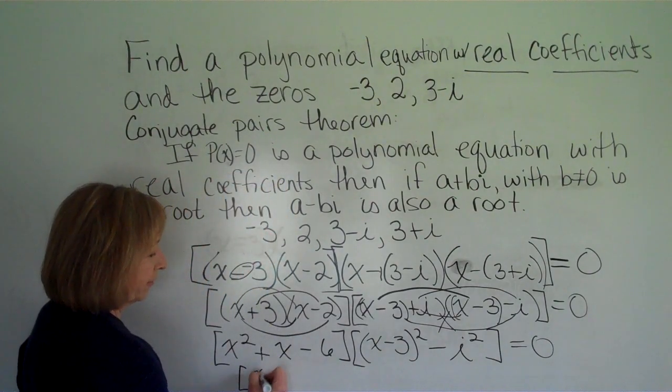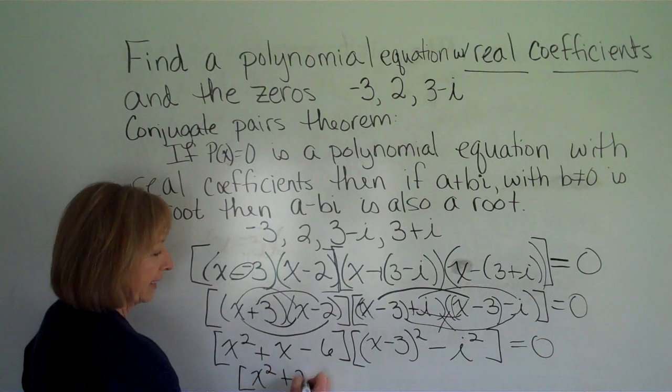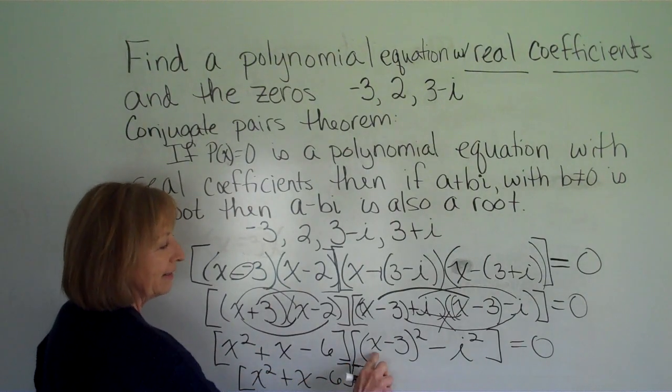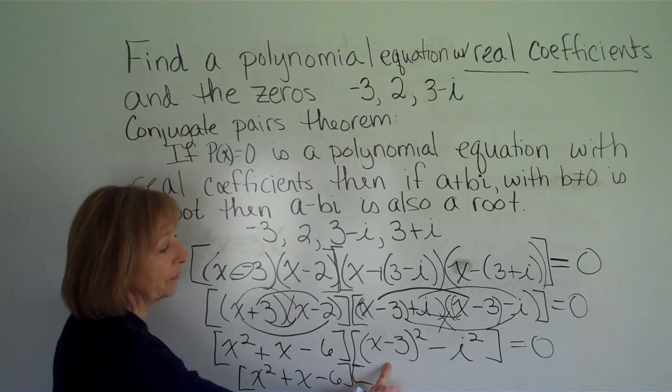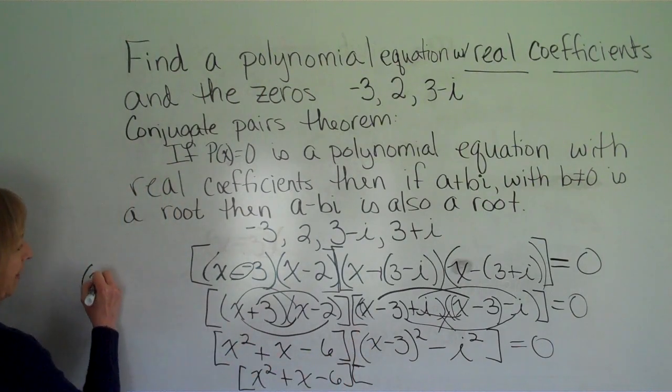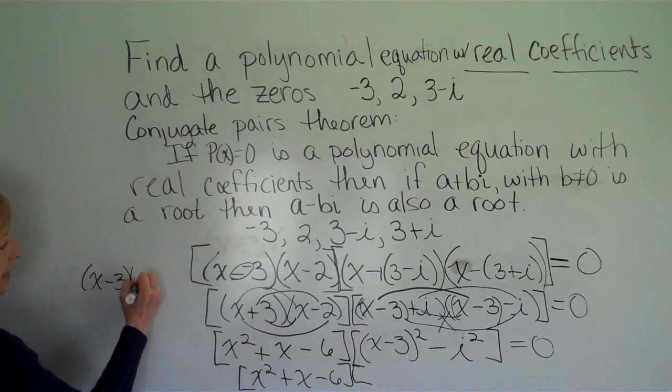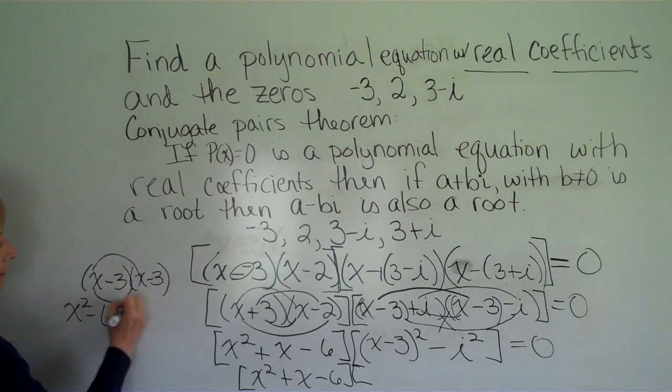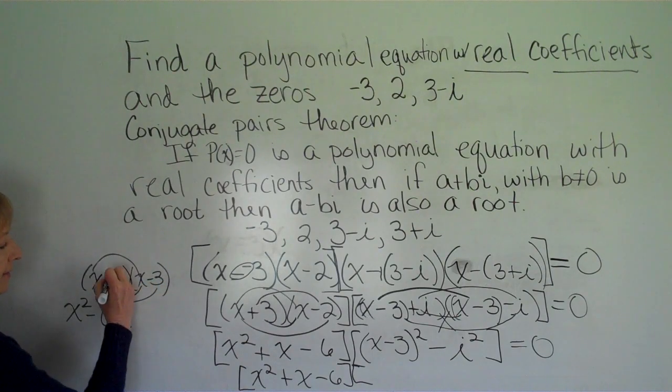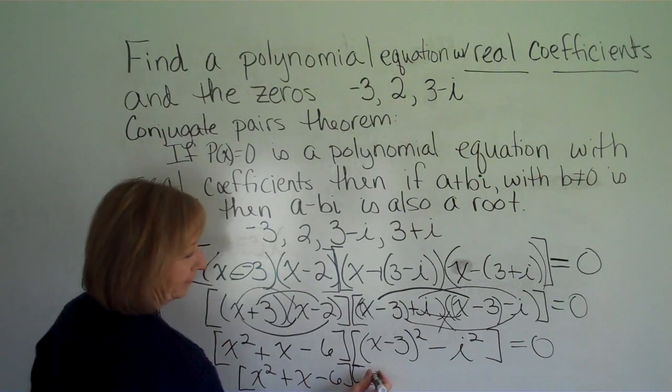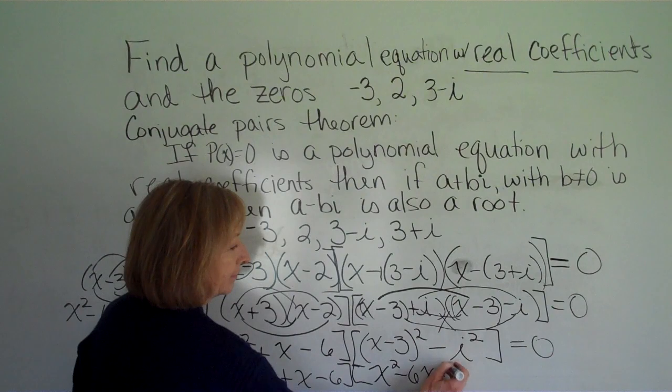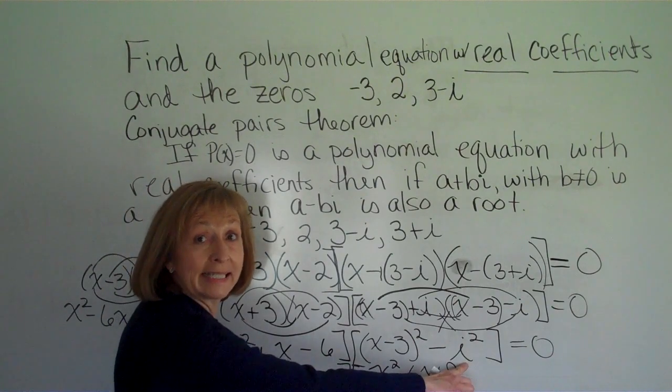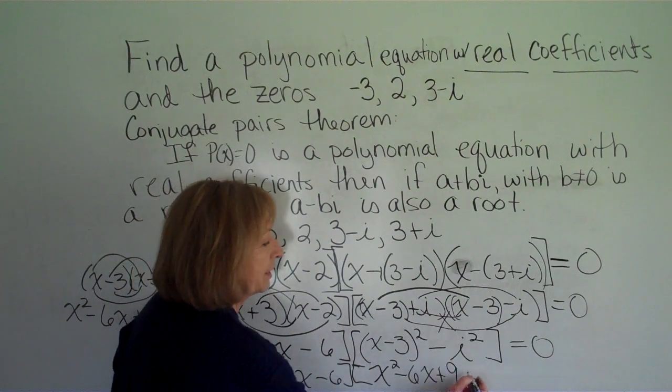Now we're going to still keep what's in our first bracket, x squared plus x minus 6. And in the second bracket, we're going to multiply out this binomial, so x minus 3 multiplied to x minus 3. So if we kind of do this off to the side, if I have x minus 3 times x minus 3, that's x squared minus 3x minus 3 more x is minus 6x, and then plus 9. And then remember that i squared is negative 1. So minus a negative 1 is plus 1.